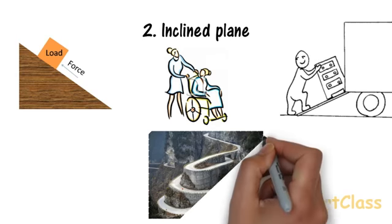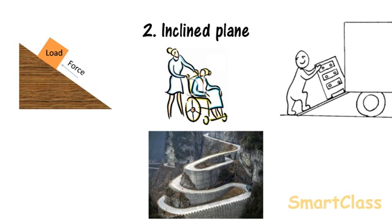Winding mountain roads also is an example of inclined plane. This slope helps buses, cars, trucks etc. to go up the mountain with ease.